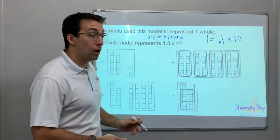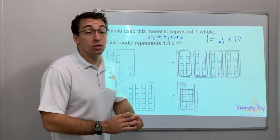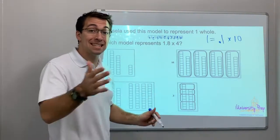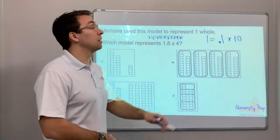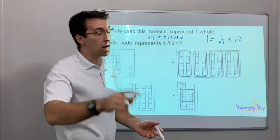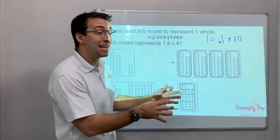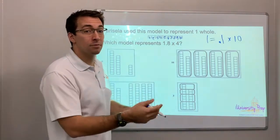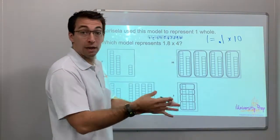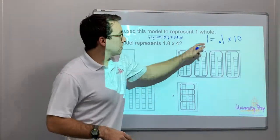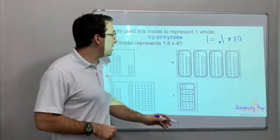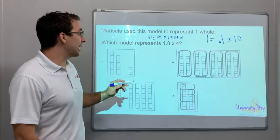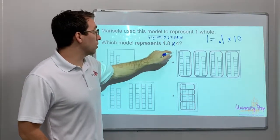Does that make sense? Because if you have a dime, a dime is one-tenth of a dollar. So if you have ten dimes, you're going to have one dollar. If you have ten pennies — a penny is one-tenth of a dime — so if you have ten pennies you have one dime. That's what that means.